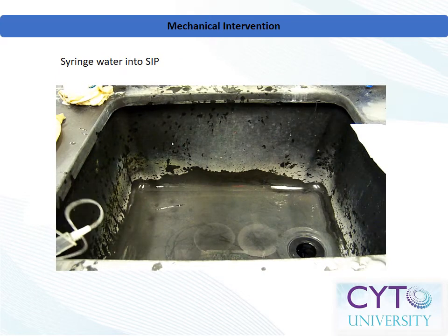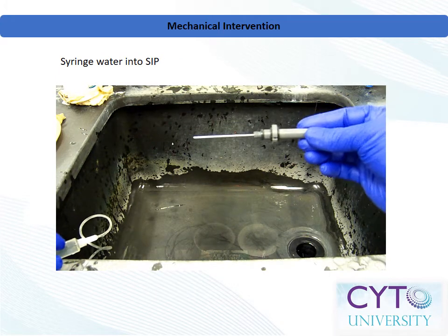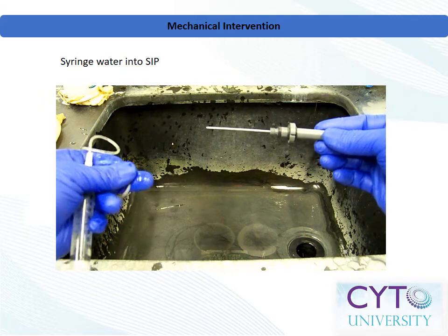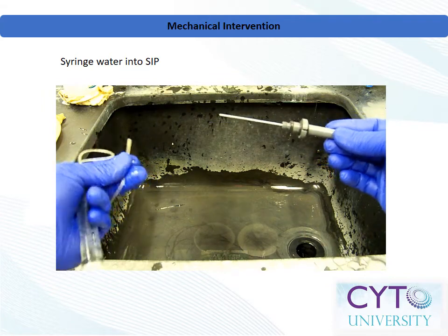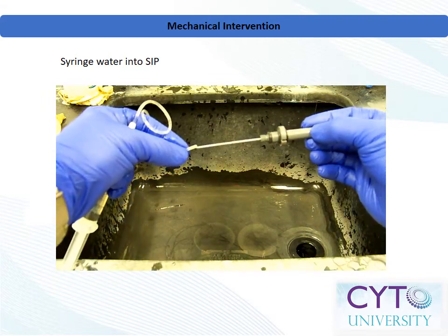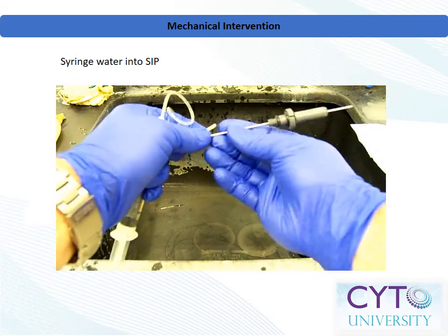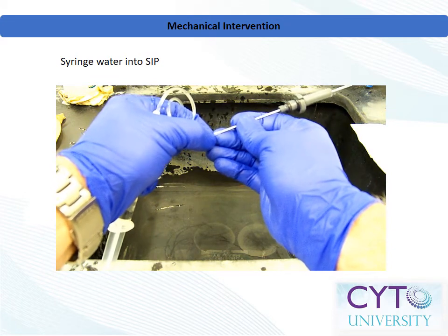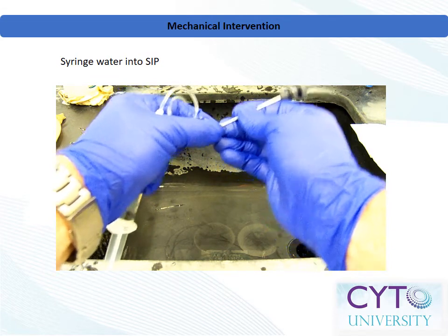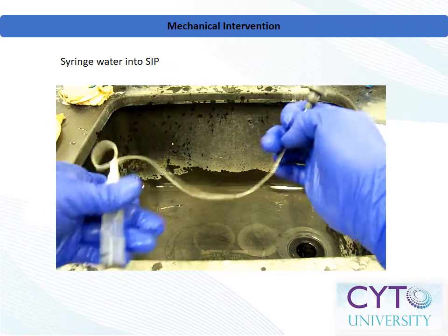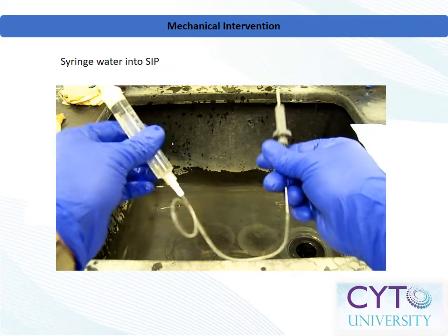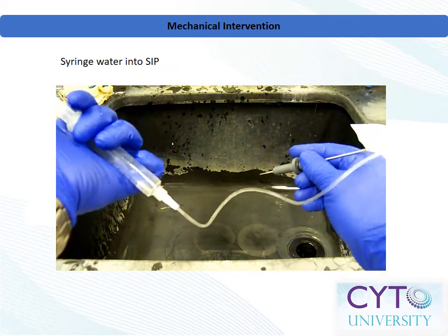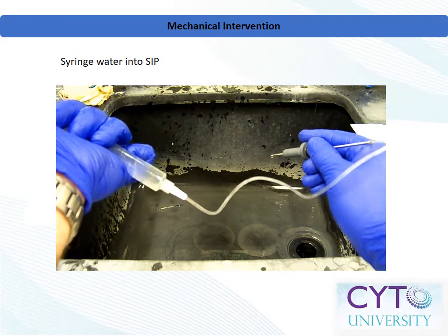As a second option, modify a butterfly syringe by cutting the tubing just above the needle. Then push the flexible tubing onto the flat end of the inner sample injection tube. Fill the syringe with cleaning solution and connect it to the lure fitting of the butterfly's tubing. Depress the syringe plunger, forcing cleanser through the inner sample injection tube.